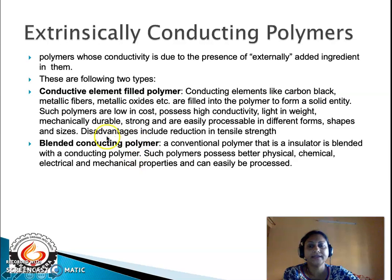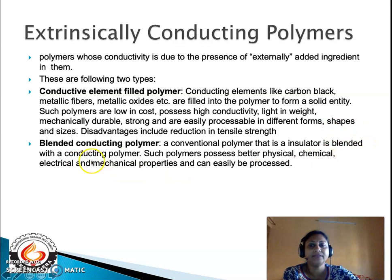The second category under extrinsically conducting polymers is blended conducting polymers. Here, a conventional polymer — an insulator — is blended with a conducting polymer. Such polymers possess better physical, chemical, electrical, and mechanical properties and can easily be processed.